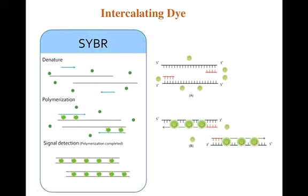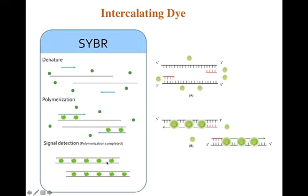One of the most popular intercalating dyes is SYBR Green. Before binding, the dye is not excited and emits no fluorescence. As DNA copies are synthesized, SYBR Green molecules intercalate into the double-stranded DNA, become excited, and emit light. After every cycle, as more DNA copies are synthesized, more SYBR Green attaches and there is more light emission.